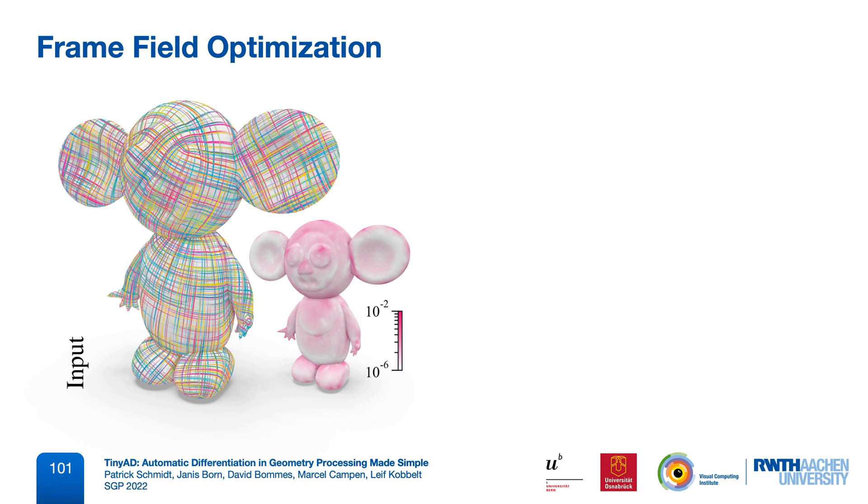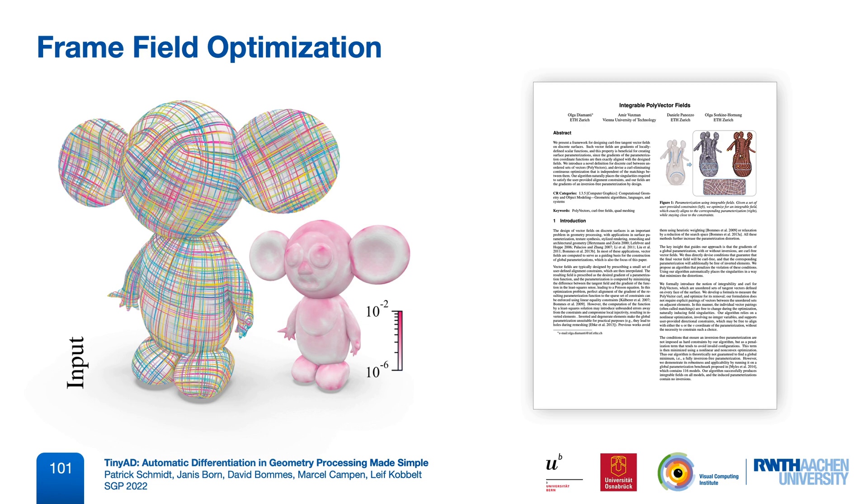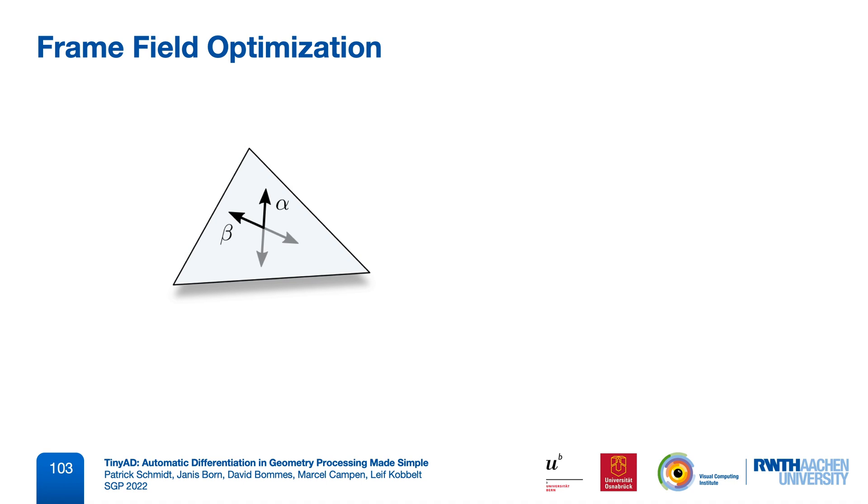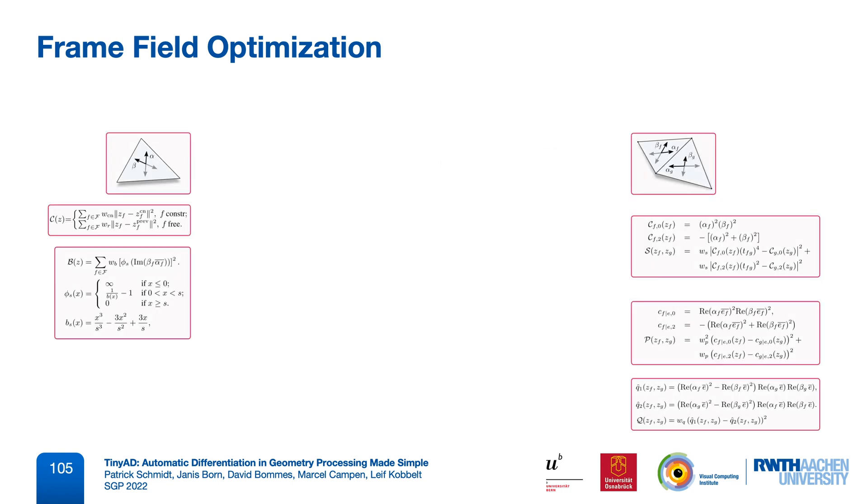Another really interesting experiment was re-implementing a method for frame field optimization from the paper integrable polyvector fields. This is a quite heavy nonlinear method that can optimize a given frame field towards a curl-free frame field. Such a field is represented by two tangent vectors per triangle, so that would be four variables in our interface. And the objective is a sum over triangle elements and over these hinge elements that connect two triangles. These are the formulas from the paper that we need to implement, and some of them are written in complex arithmetic. We also added support for this by making sure that TinyAD doubles can be used inside the standard complex type.